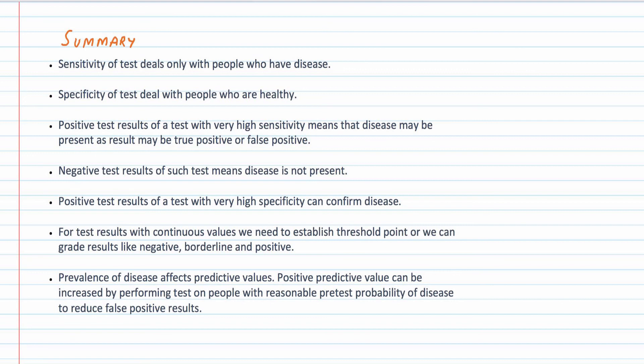Post-test probability of disease can be calculated by predictive values with help of sensitivity and specificity of the test. However, we have seen that prevalence of disease can significantly affect predictive values. Positive predictive value can be improved by performing tests on people with reasonable pre-test probability of disease, which will result in increased prevalence of the condition in the group and better positive predictive values. Today we have discussed sensitivity, specificity, and how to calculate post-test probability by predictive values. In the next lecture, we will discuss how to calculate post-test probability by likelihood ratios.